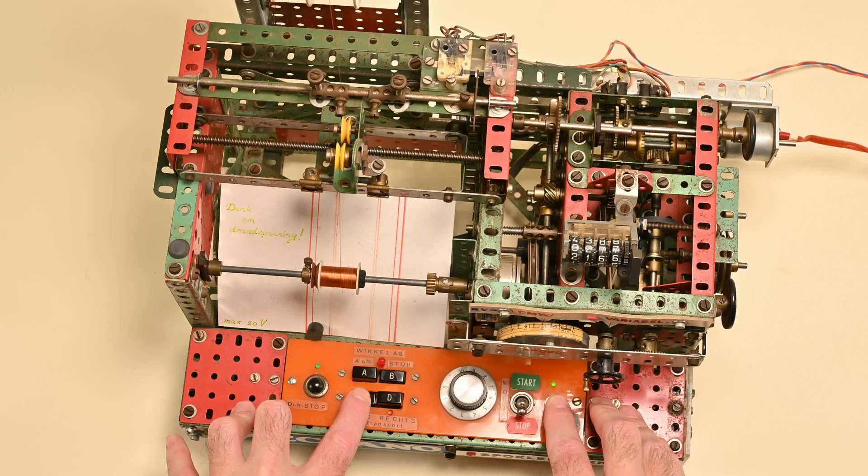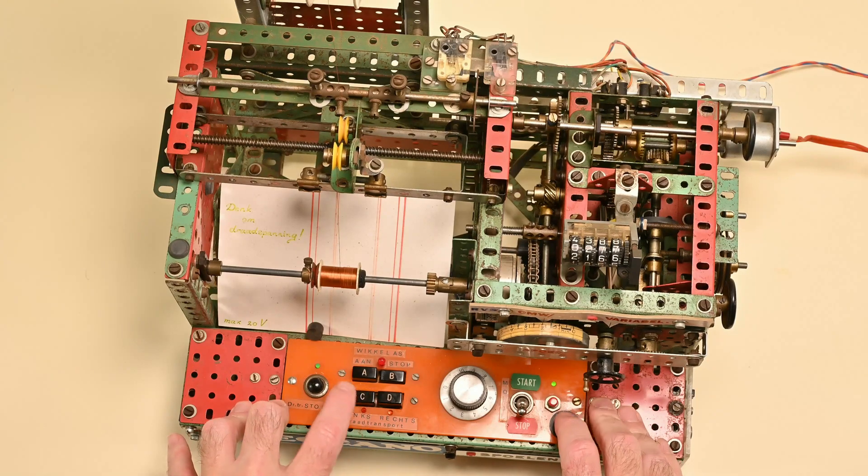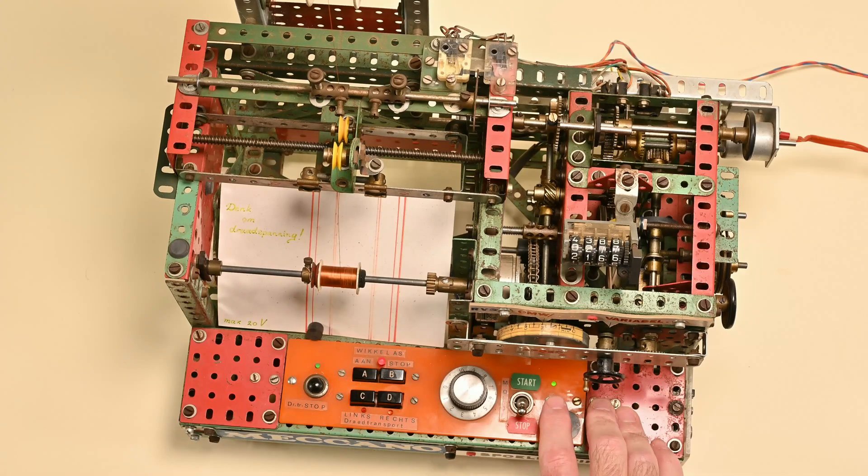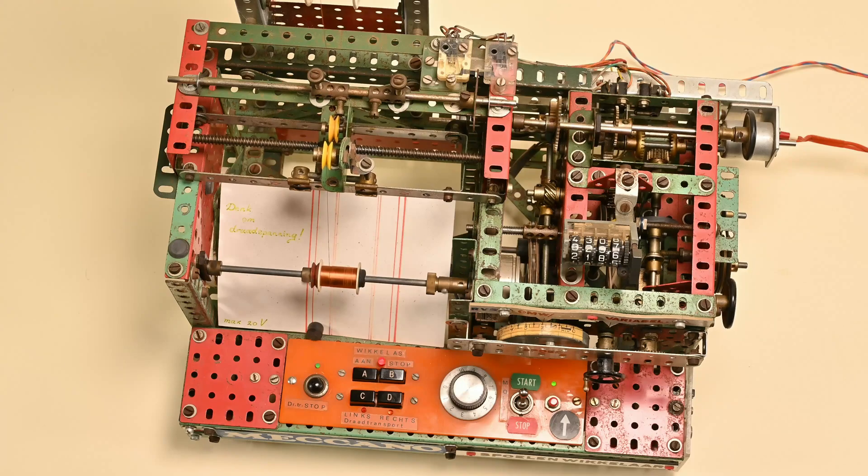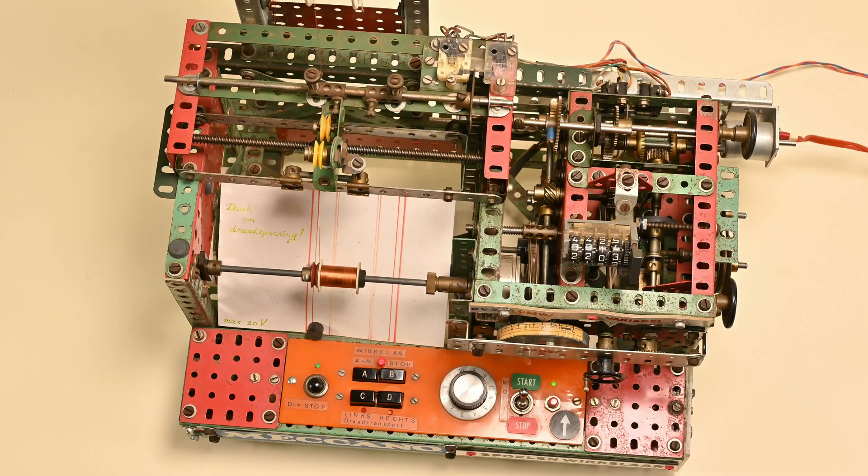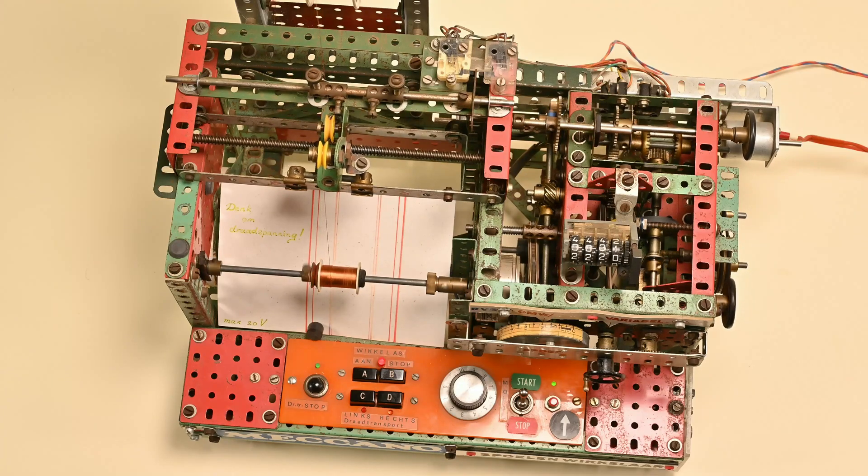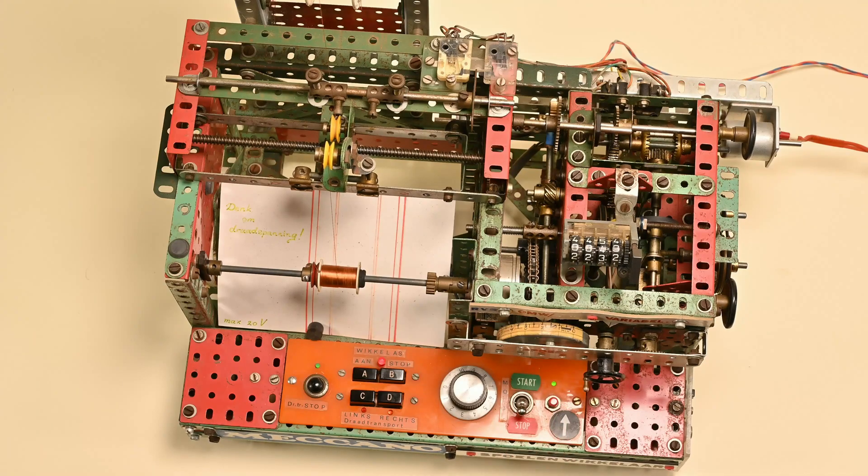You can see that the wire guide is not running synchronously anymore with the coil in this part of the video. So, I stopped the video, repositioned the wire guide until it's okay, and then continued the winding process.